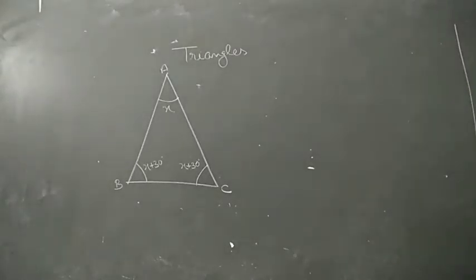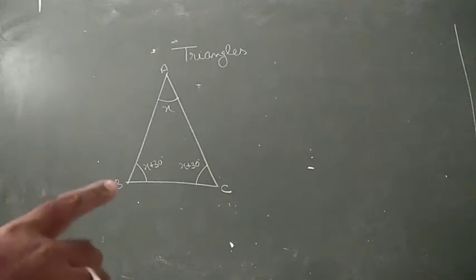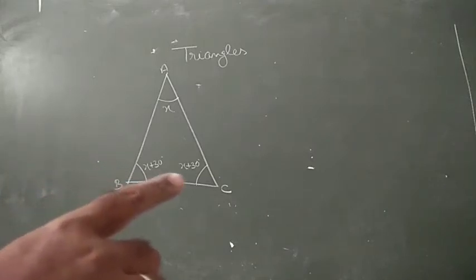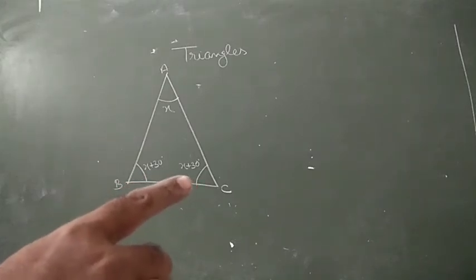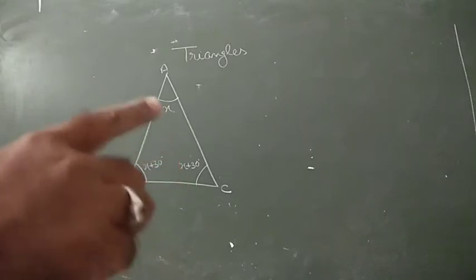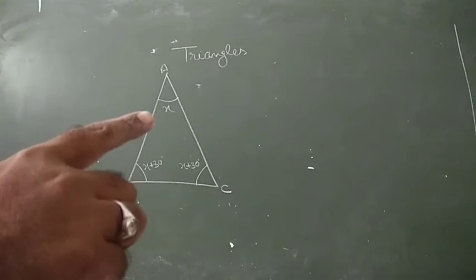The next question says: in an isosceles triangle, the base angles are 30 degrees greater than the vertical angle. Find the measurement of all three angles. In this figure, the two base angles are 30 degrees greater than the vertical angle. Suppose the vertical angle equals x.